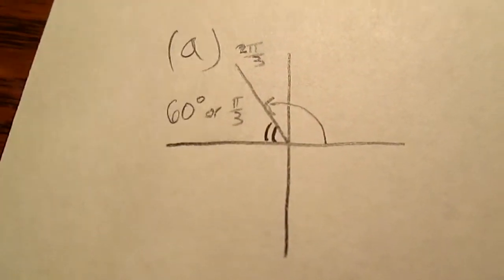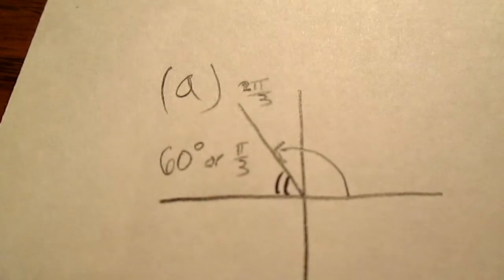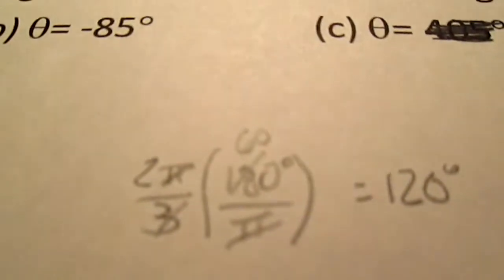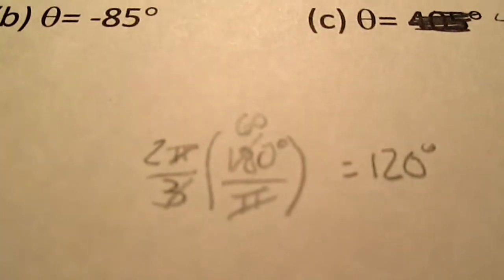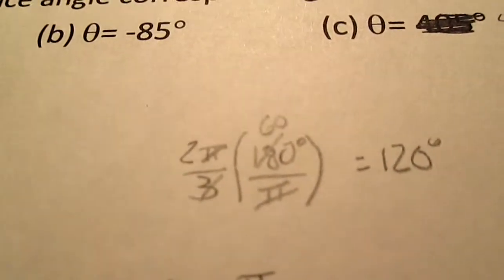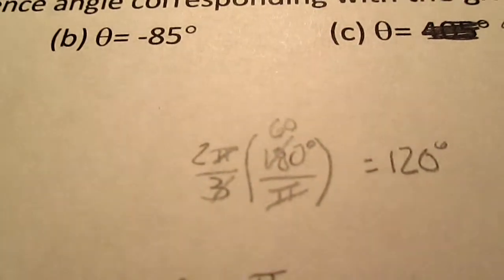2π over 3, and if you're unfamiliar with or if you don't like radians, remember, to change a radian into a degree you would just times it by 180 degrees over π, which I've solved already. π's cancel out, 3 goes into 180 60 times, 60 times 2 is 120.